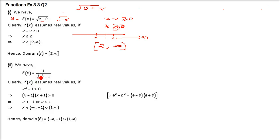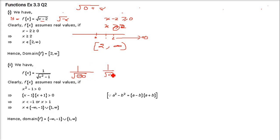Now coming to the second situation. Here the root is in the denominator. In the denominator, we cannot have a negative value inside the root — that is understood. But also, we cannot have a 0, which we were able to accept in the numerator. Zero is not allowed here because under root 0 is 0, and 1 divided by 0 — you can't even imagine something divided by 0 — it is undefined.